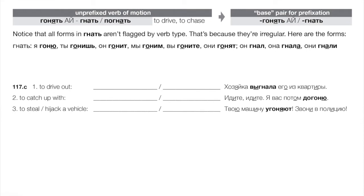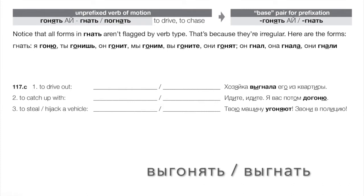The next verb: driving and chasing — гонять/гнать/погнать. The base pair is гонять/гнать. Note that гнать is an irregular verb: я гоню, ты гонишь, он гонит, мы гоним, вы гоните, они гонят. For prefixed forms: to drive out or chase out — выгонять/выгнать. Example: хозяйка выгнала его из квартиры — the landlady chased him out of the apartment, kicked him out.